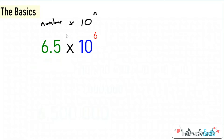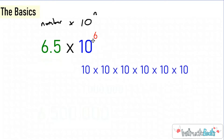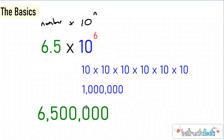This is an easier way to write large numbers. When you multiply by 10 to the sixth power, that's really telling you that you're multiplying 10 times 10 times 10 times 10 times 10 times 10, which is 1 million. So 6.5 times 10 to the sixth power is really 6.5 times 1 million, which is 6,500,000. In standard form we'd write 6,500,000; in scientific notation we'd write 6.5 × 10⁶ — a little bit shorter.